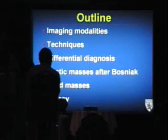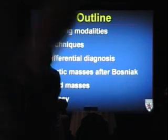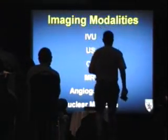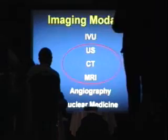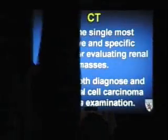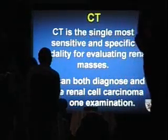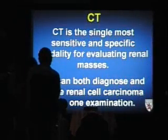We'll talk about modalities, techniques, diagnosis, the Bosniak classification, which is very important, and solid mass biopsy. The imaging modalities we have at our disposal — sonography, CT, and MRI — are the three major ones. CT is really king when it comes to renal masses. It's the single most sensitive and specific modality for evaluating them, and can be useful for diagnosis and staging of renal cell in one exam.